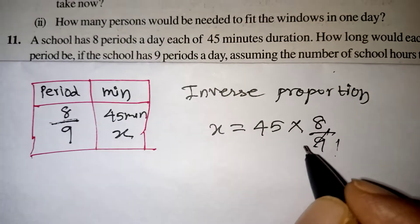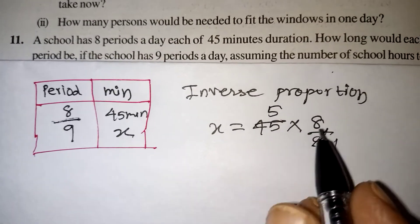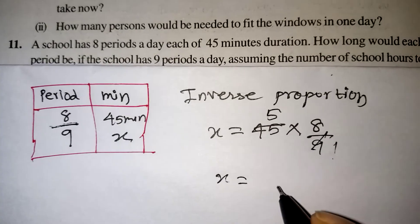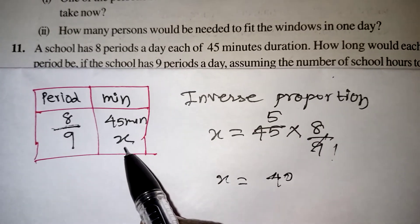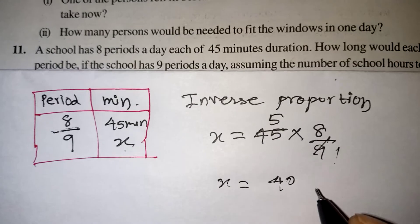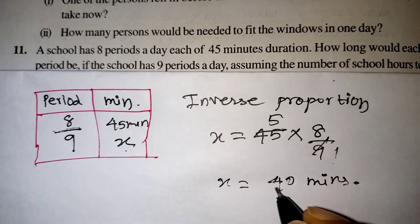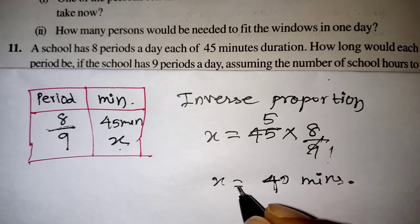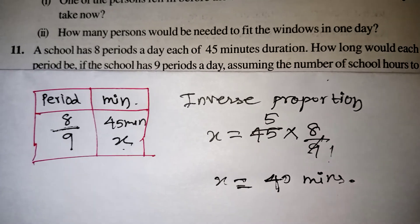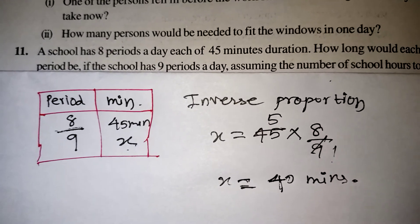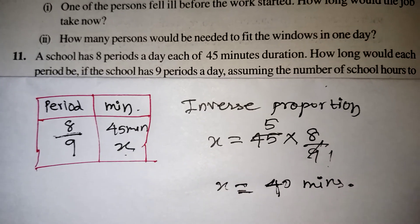So 45 multiplied by 8 by 9: 9 fives are 45, and 8 fives are 40, so x equals 40. The time is mentioned in minutes, so that is 40 minutes. If there are 9 periods in the school, each period will be 40 minutes. That is the correct answer. Thank you for watching — like and subscribe to our channel for more videos.